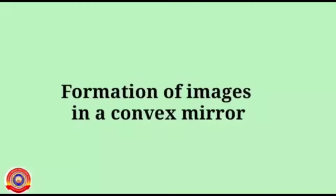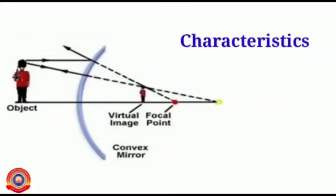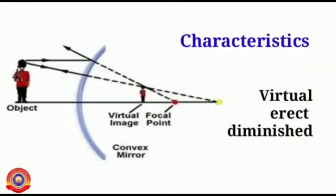Do convex mirrors also form images like a concave mirror? Let's see. Whatever may be the position of the object, the position of the image is always between the pole of the mirror and the principal focus. The image formed by a convex mirror is always virtual, erect, and diminished.